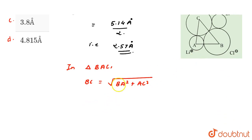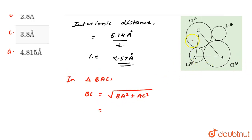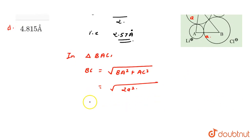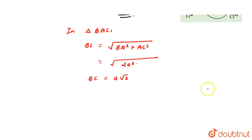That is, BAC is the diagonal, or if we find BC then how much will it be? Root 2. So we know how much it is, that equals 2.57. So we will calculate, that is 2.57 angstrom times root 2 value 1.414.